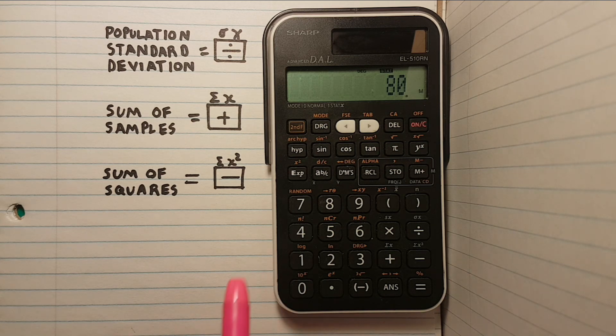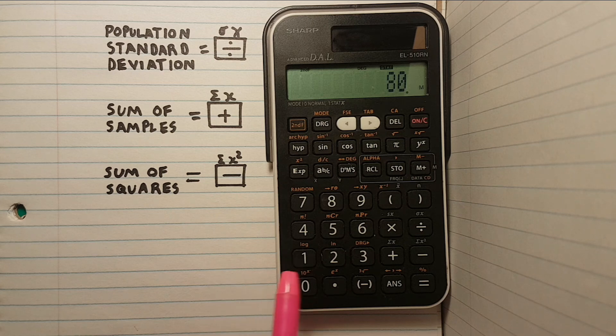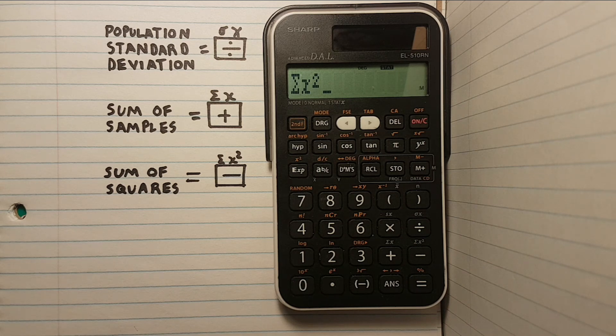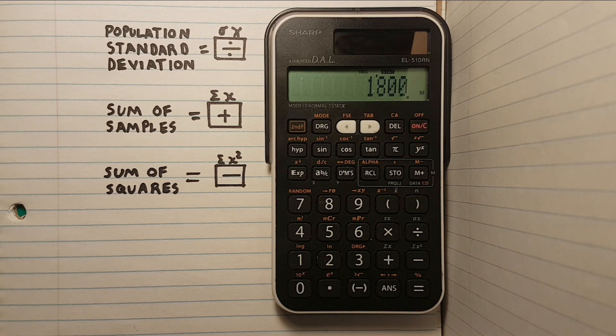Finally, if we want to find the sum of squares of our data set, we would hit second function followed by the RCL key and then the minus key. We then see a large sigma X squared on the screen. If we hit equals, we get 1800, which is correct.